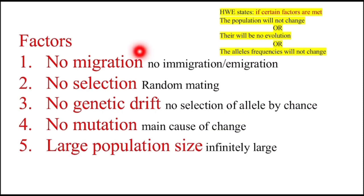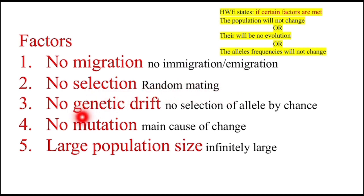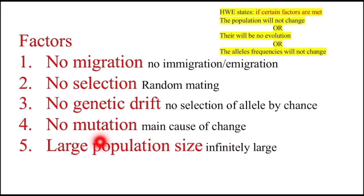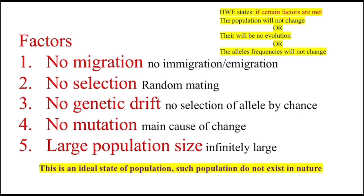These factors include: no migration, meaning no immigration or emigration in the population; no selection, meaning mating is always random; no genetic drift, meaning no selection of alleles by chance occurs in the population; no mutation, as mutation is the main cause of change; and large population size. This is an ideal state — such populations do not exist in nature, which is why natural populations evolve.